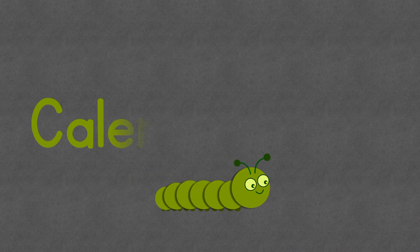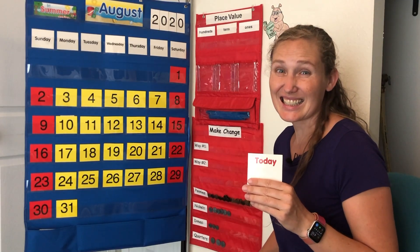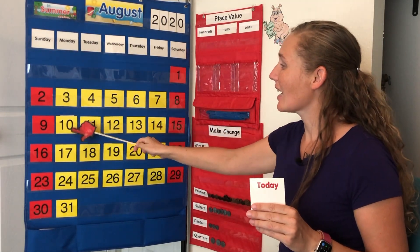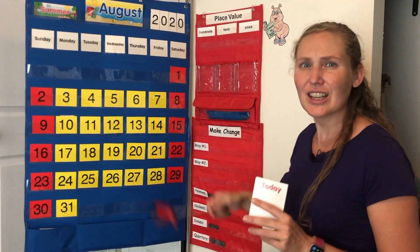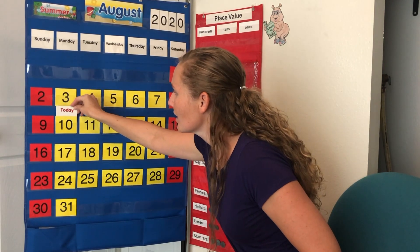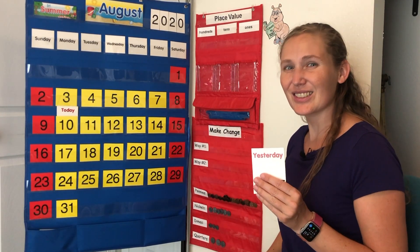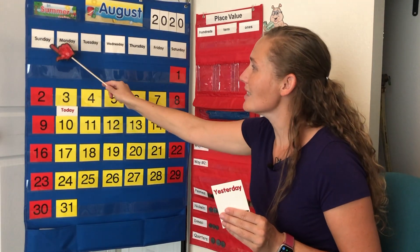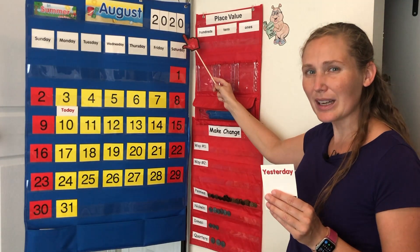It's calendar time! Today is Monday, August 10, 2020. Do you know what yesterday was? You're right! Yesterday was Sunday, August 9, 2020.